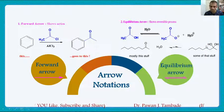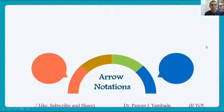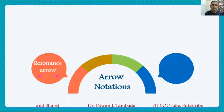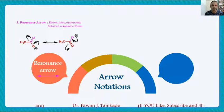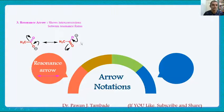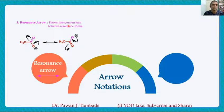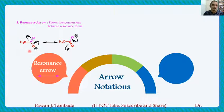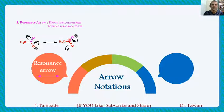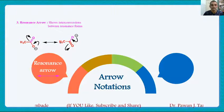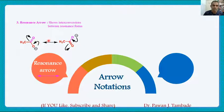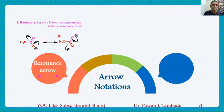The next arrow notation we use is the resonance arrow. The resonance arrow is shown by a double-headed arrow with points at both ends. This resonance arrow is used to show interconversion between resonating forms. For example, an anion by means of resonance can be shown in multiple true structures where the only difference is in the position of electrons.